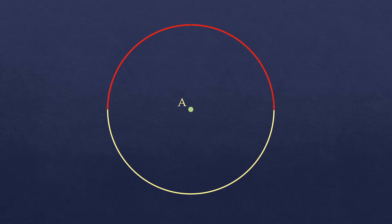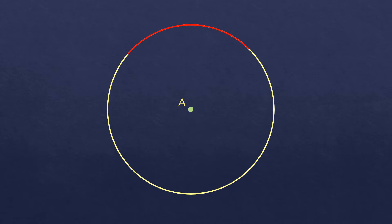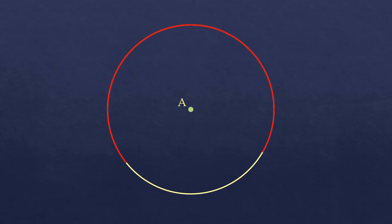The part of the circle colored in red is a segment of the circle — if it connects two endpoints on the circle, it's called an arc. If the endpoints of the arc are the endpoints of a diameter, then we call it a semicircle. If the arc is smaller than a semicircle, we call it a minor arc. If it's bigger than a semicircle, then it's called the major arc.